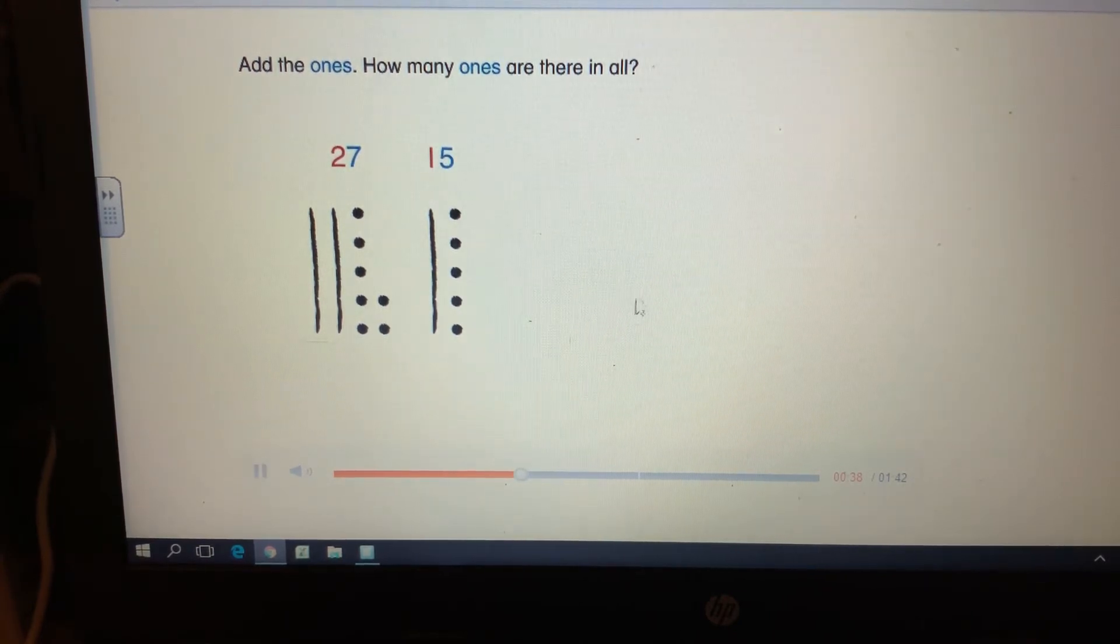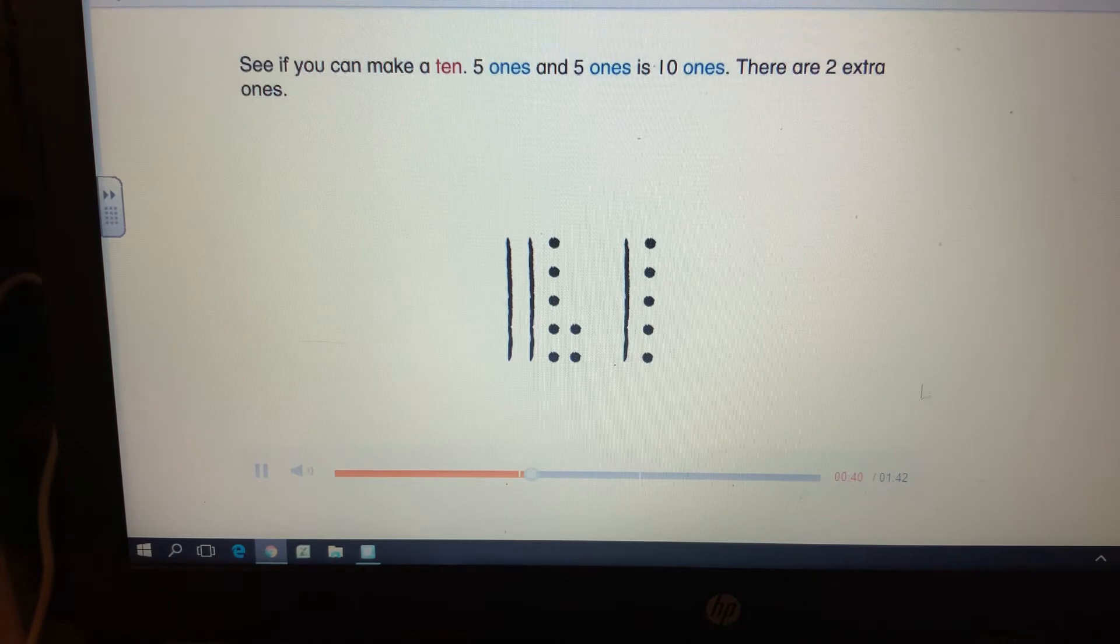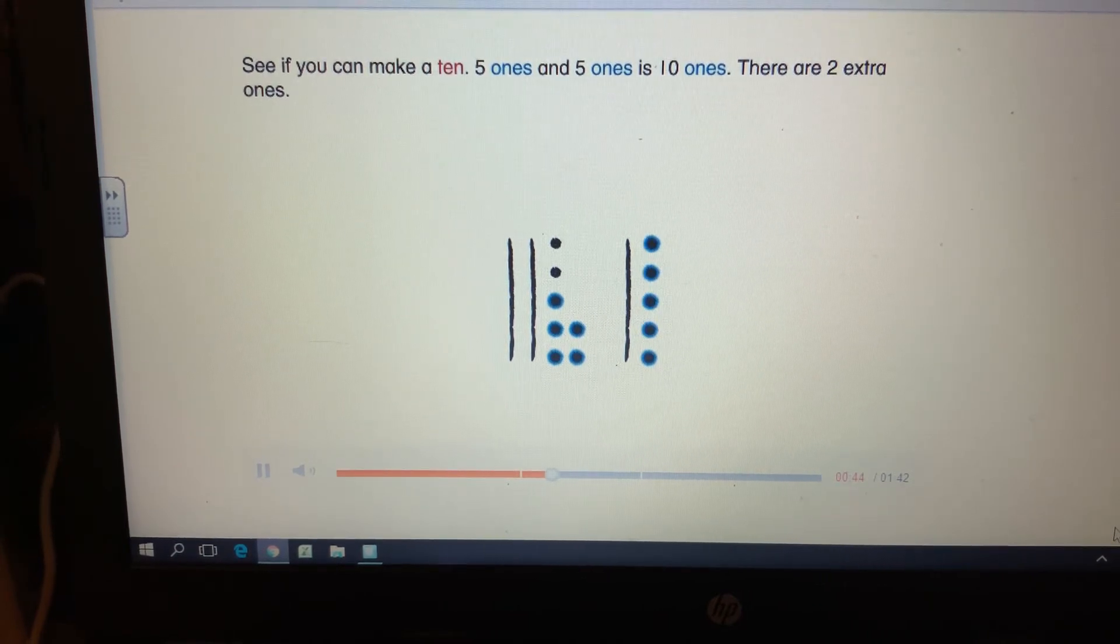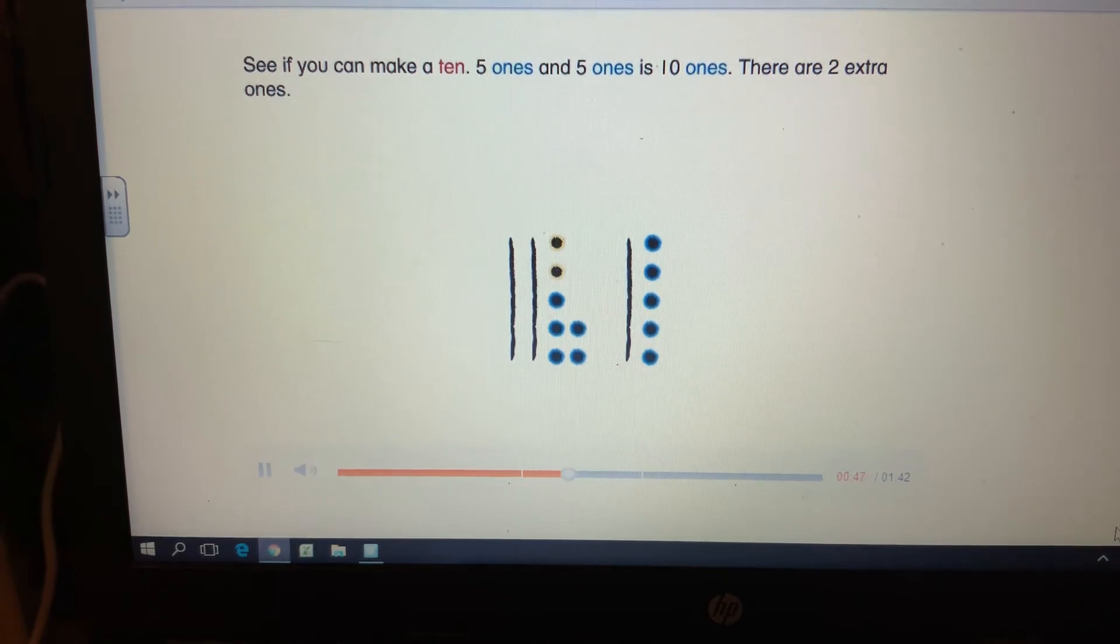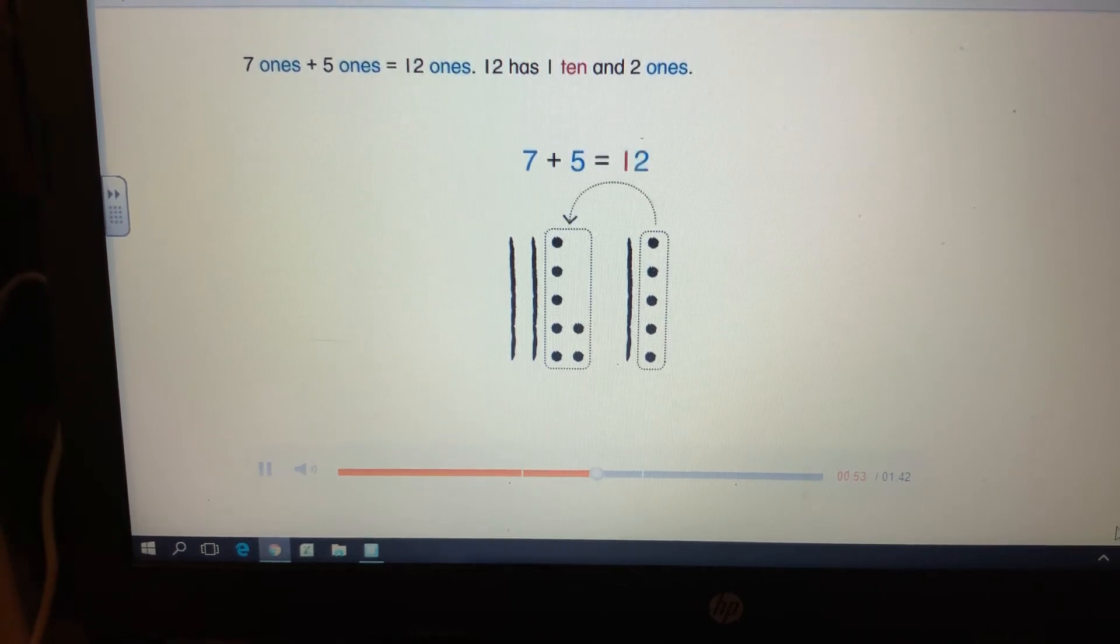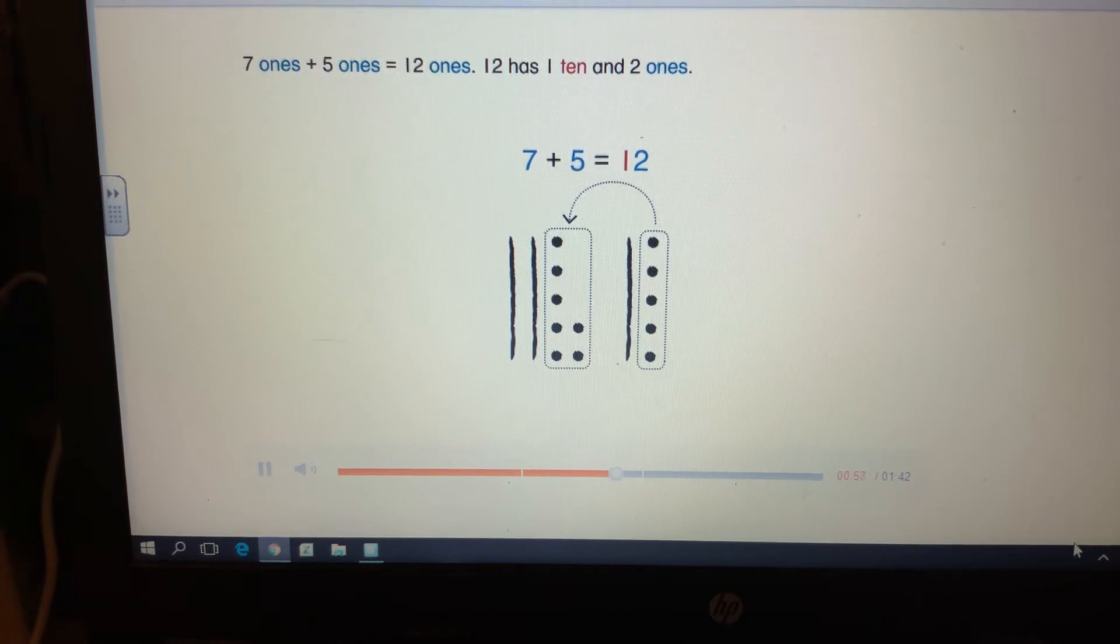See if you can make ten. Five ones and five ones is ten ones. There are two extra ones. Seven ones plus five ones equals twelve ones. Twelve has one ten and two ones.